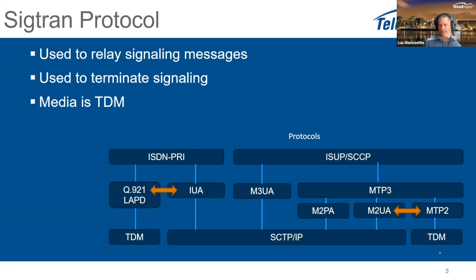On the signaling gateway portion, the information is simply relayed. On the media gateway controller, however, the M2UA information needs to be terminated. It receives SCTP, IP, and M2UA, then uses MTP3 to manage the incoming links. The upper layers — ISUP to control TDM media circuits and SCCP for messaging — are also handled. For example, on an SS7 network, SMS messages travel over SCCP.